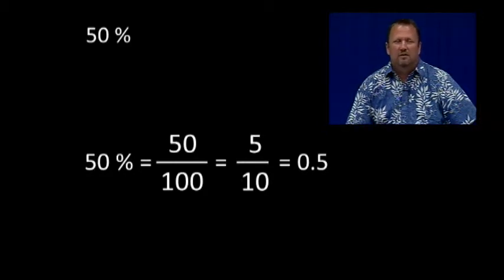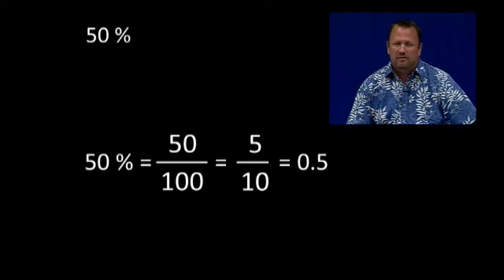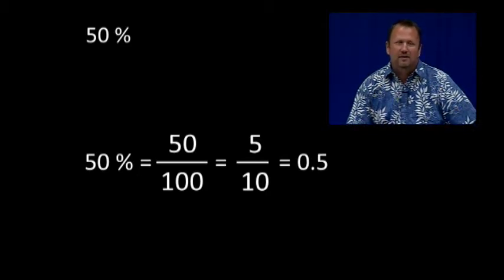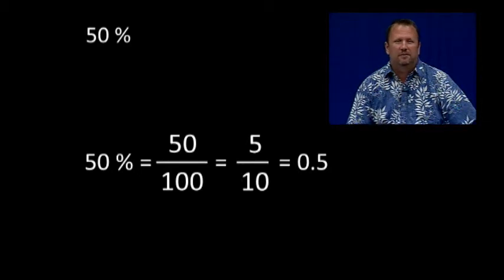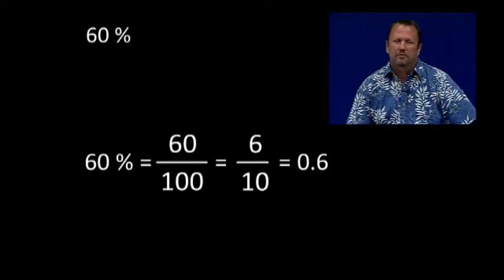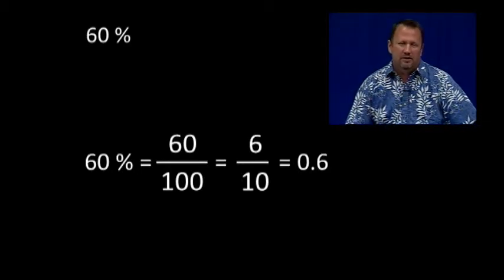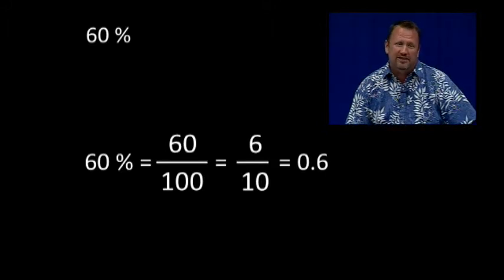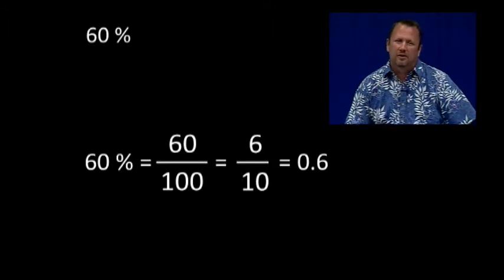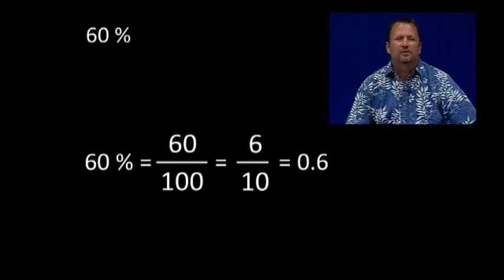50% is equal to 50 hundredths, which is equal to 5 tenths, which is equal to 0.5. 60% is equal to 60 hundredths, which is equal to 6 tenths, which is equal to 0.6.